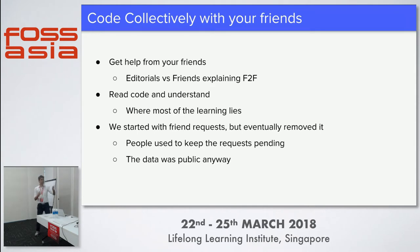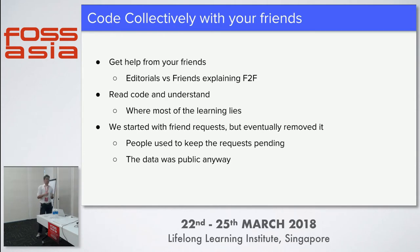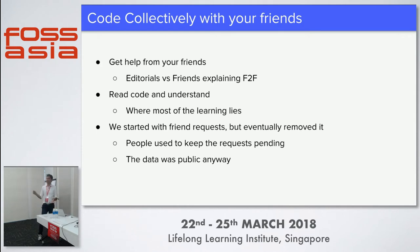We started with a friend request feature. Users would register on our website and send friend requests to each other so that each other could see submissions. But we eventually stopped that feature because people would not accept the friend request, and there's no data which is actually private. So why not just add the friend directly? We just removed that feature - now you can just add a friend and your submissions would be visible to other friends.